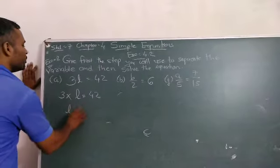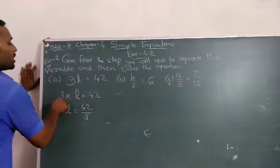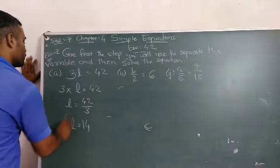So now, multiplication is converted into division. 42 divided by 3. Multiplication is converted into division. So, l is equal to 14.